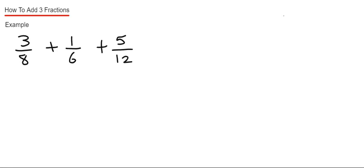Hi guys, welcome back. This is Maths 3000. I'm going to show you how to add together three fractions with different denominators. The first thing you need to do is look at your denominators and find a number that 8, 6, and 12 go into.